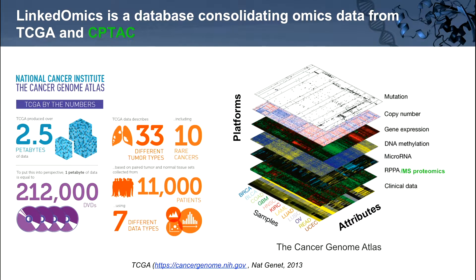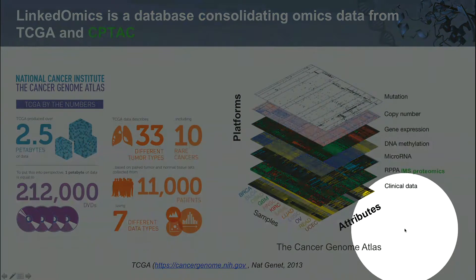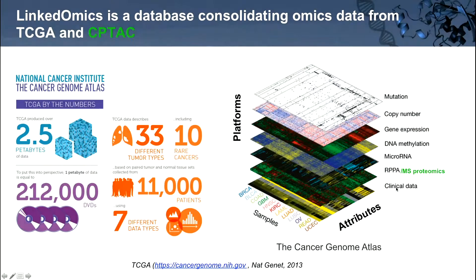CPTAC further expanded upon the proteomics data sets in TCGA by generating mass spectrometry-based proteomic and phosphoproteomic data sets using the same samples from some of the TCGA studies. Although TCGA has come to an end, CPTAC is the next generation of TCGA, continuing to perform large-scale omics data collection from clinical cancer trials with a strong emphasis on proteomic data sets. As results are published, LinkedOmics will continue to grow.